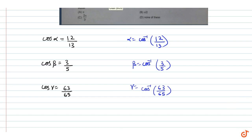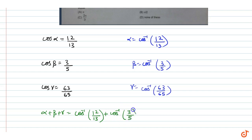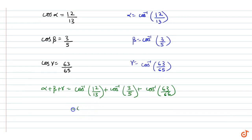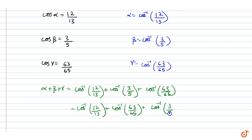Now we can find α + β + γ. So α + β + γ equals cos⁻¹(12/13) + cos⁻¹(3/5) + cos⁻¹(63/65), that is cos⁻¹(12/13) + cos⁻¹(63/65) + cos⁻¹(3/5).